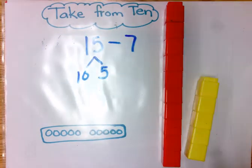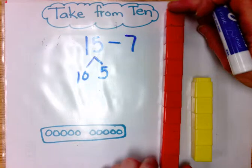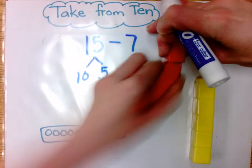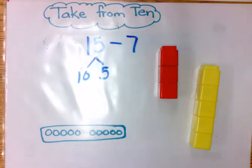15 is made of 10 and 5. I take away 7, and I'm left with 3. 3 and 5 equals 8.